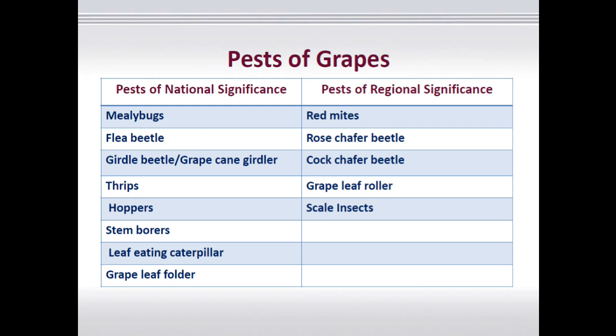In the case of national significance, generally mealybug, flea beetles, the girdle beetle, some species of thrips, hopper, stem borer, leaf-eating caterpillars, and leaf folder are included. And if you look at regional significance, you get some species of mite, chafer beetles, leaf rollers, and scale insects.